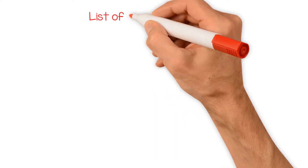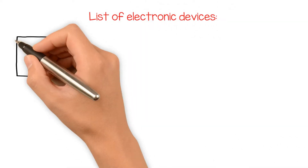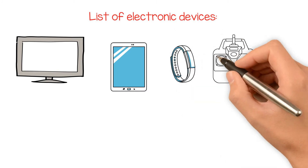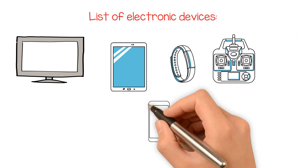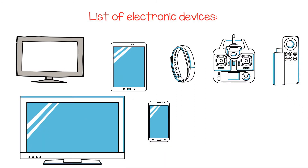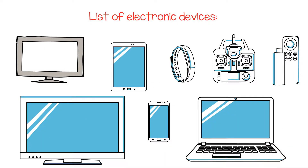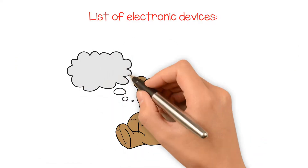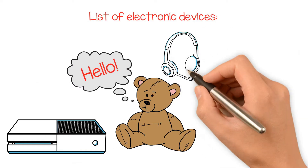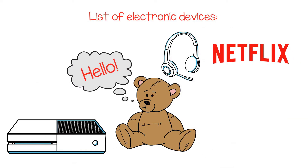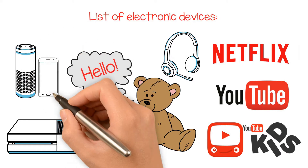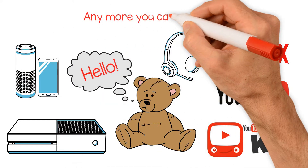Our list includes, but is not limited to, computers, tablets, smartwatches, gaming devices, cell phones, televisions, digital music players, handheld computers and tablets, children's interactive and talking toys, DVD players, digital recorders, Netflix, YouTube, YouTube Kids, Alexa and Siri. Any more you can think of?